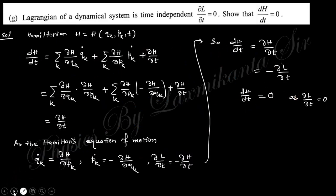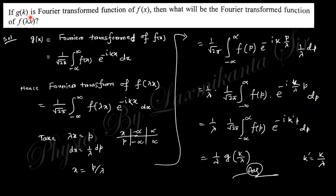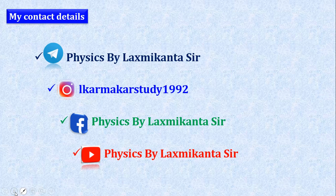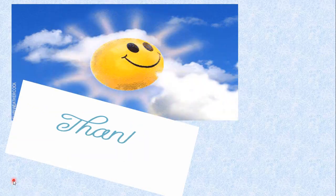The next question: if g(k) is the Fourier transform of f(x), find the Fourier transform of f(λx). Starting from the Fourier transform formula for f(x), substituting λx and changing variables by letting p = λx so dp = λ dx, the integral transforms accordingly. Setting k' = k/λ, the Fourier transform of f(λx) is (1/λ) g(k/λ). If you have any doubts, please comment below. Thank you and see you in the next video.